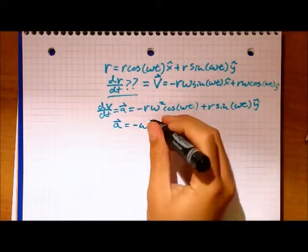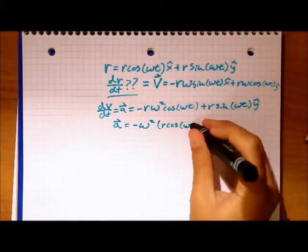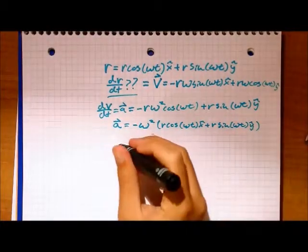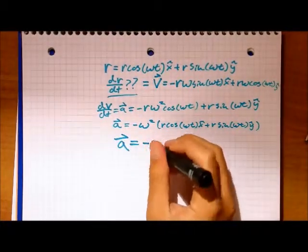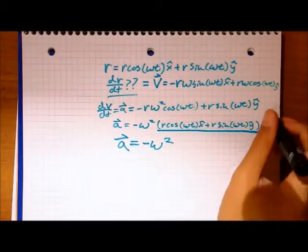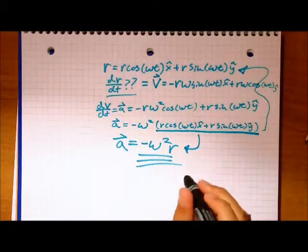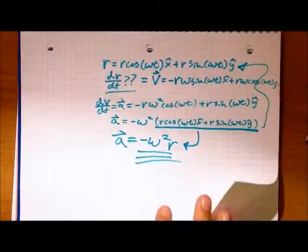This derivative is relatively easy to take with respect to t, as long as we ignore the x and y-hat coordinate direction vectors. Substituting our r equation back in allows us to solve for our acceleration simply in terms of angular velocity and our radius of motion.